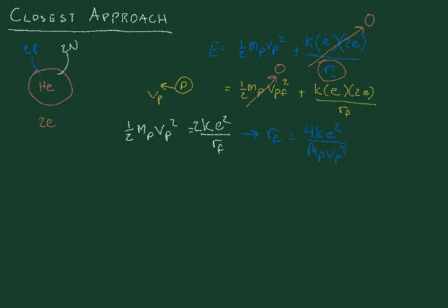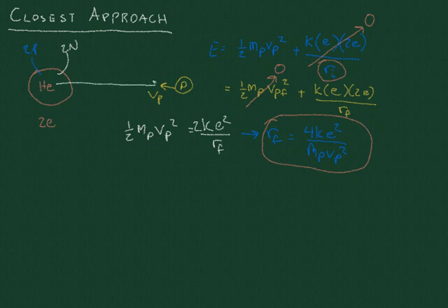This is the closest distance the proton can get to the helium atom. Notice that by making the velocity larger, r_final gets smaller, meaning they get closer together - which is exactly what we'd expect.